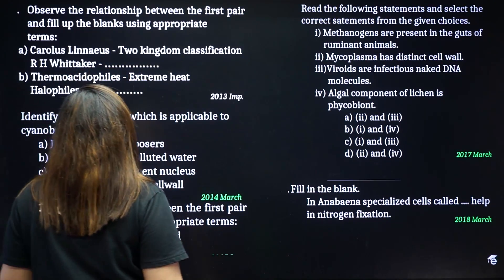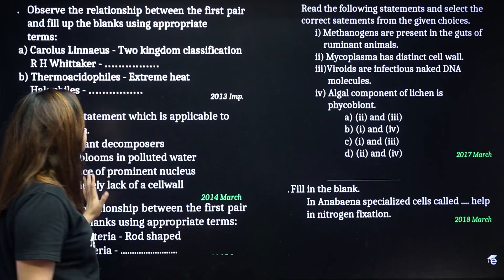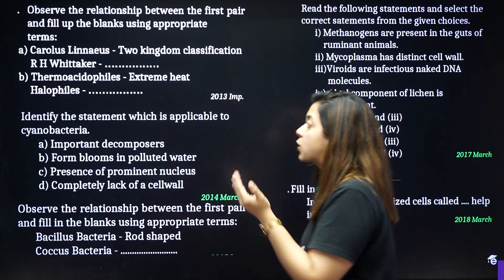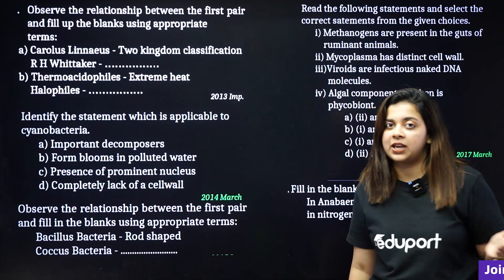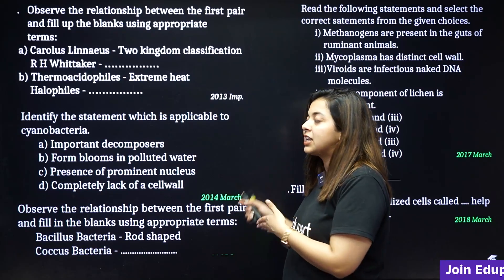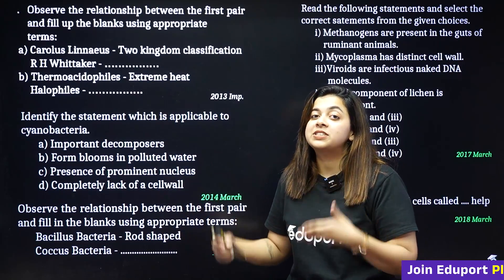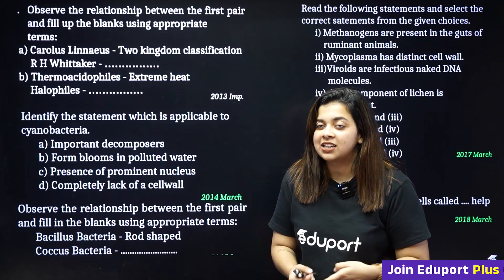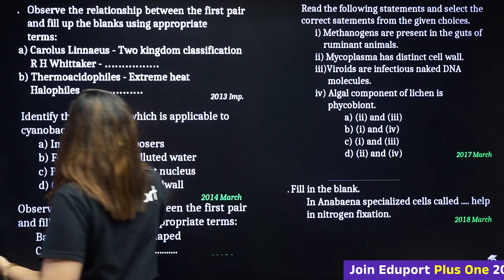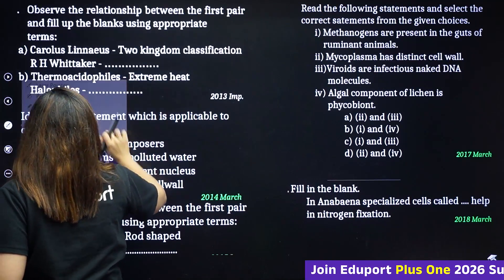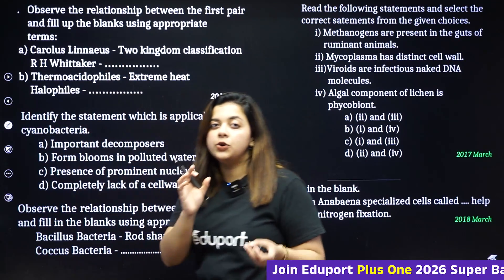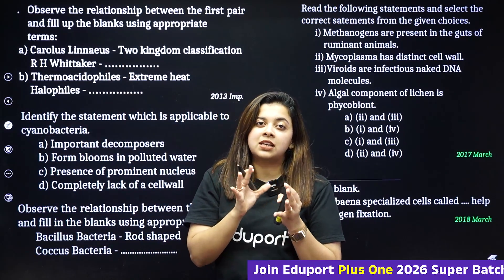First one: observe the relationship between the first pair and fill up the blanks using appropriate terms. Carolus Linnaeus is to two kingdom classification. What do we call R.H. Whittaker? In this chapter, you can expect a maximum of 2-3 marks.